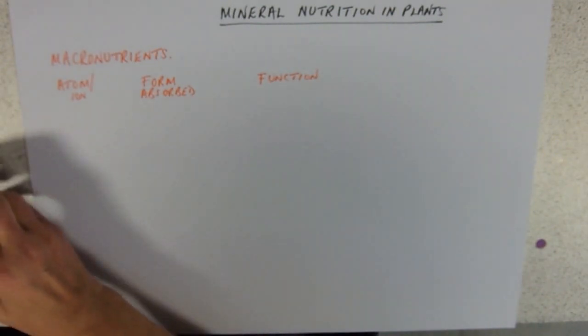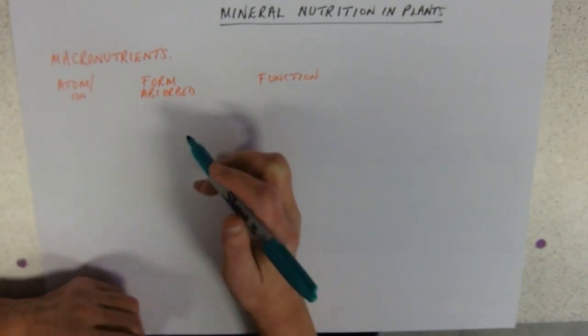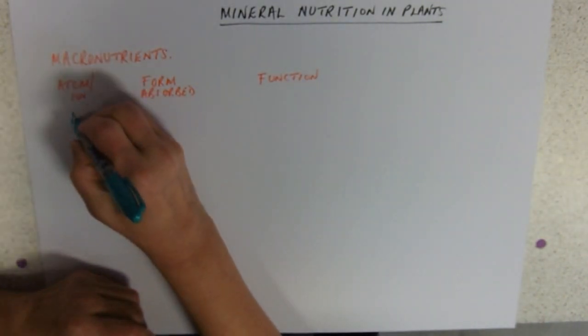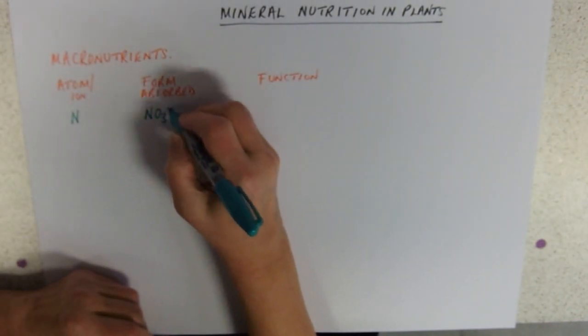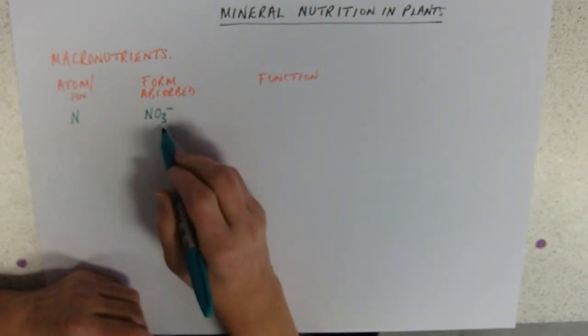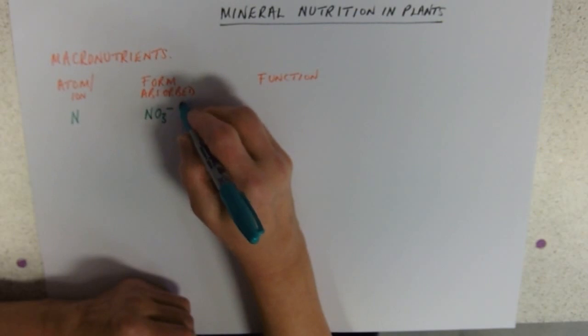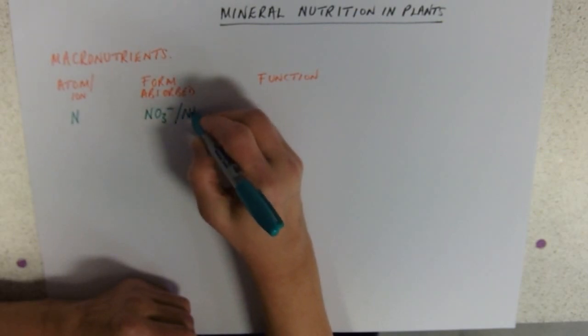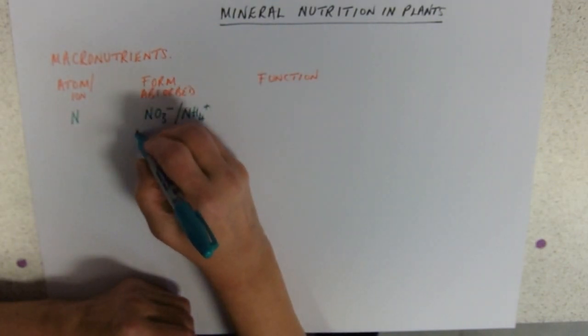Our main atom that plants need is nitrogen. The form in which it's absorbed, vast majority in the form of nitrate, NO3 minus, and the other form is generally NH4 plus, those are ammonium ions.